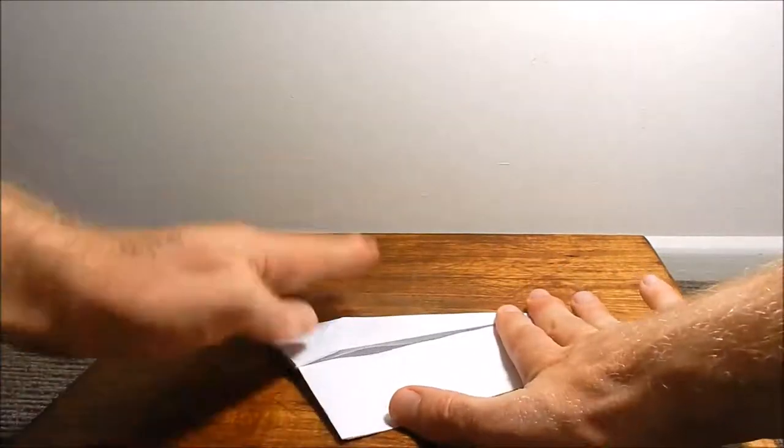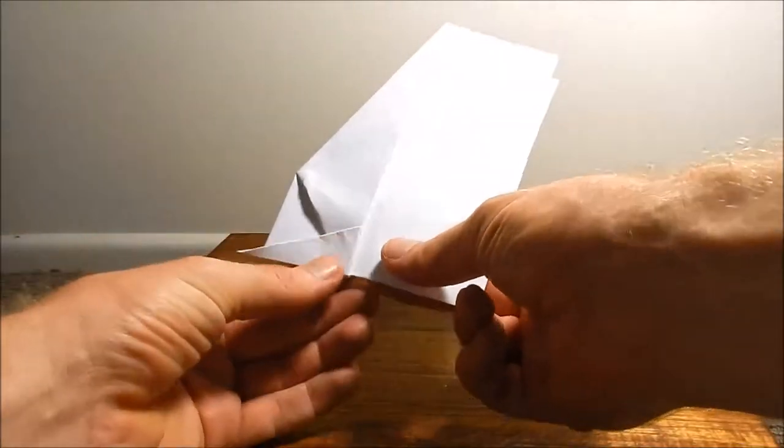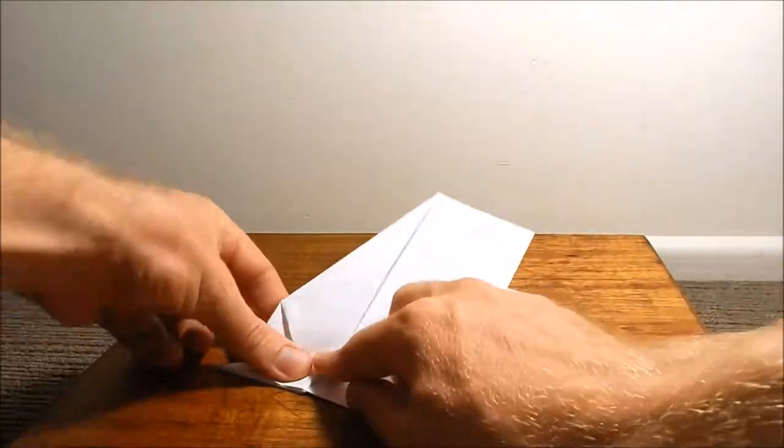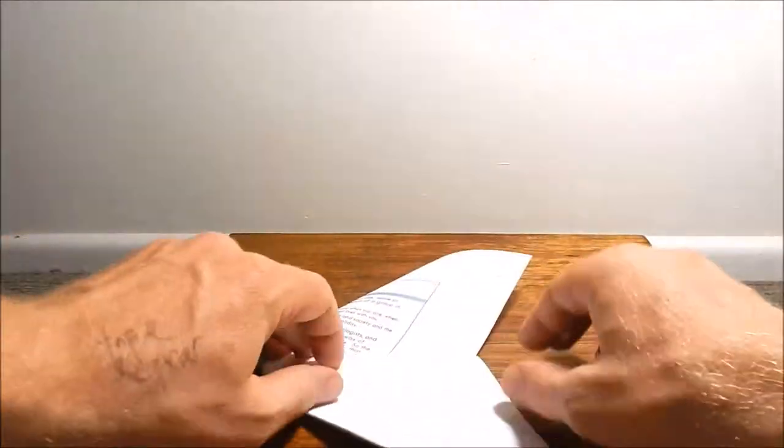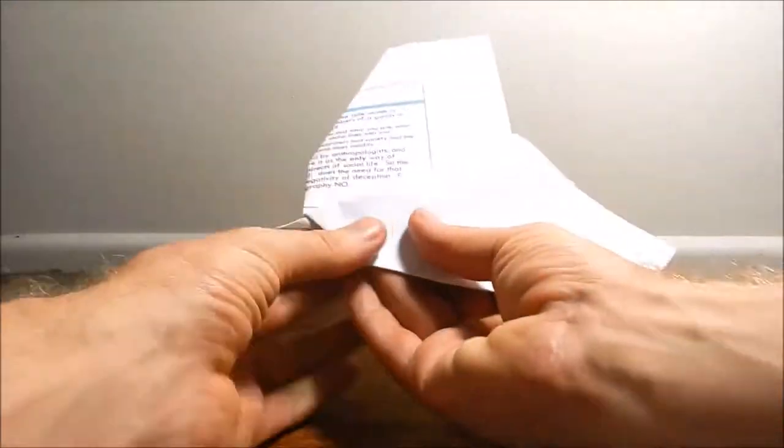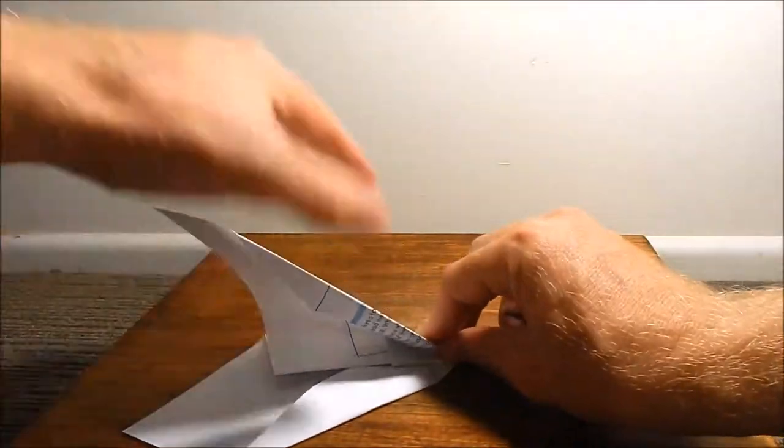Now we're going to fold the wings. So the wings have to run in line with that triangle, that nose. So you fold it down on an angle like that, turn it over, and do the same thing.